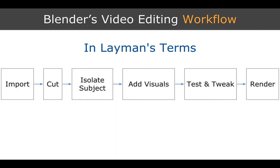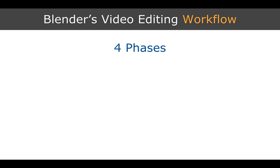So we import, we cut, we isolate the subject, we add our visuals, we test and tweak it, and then we render. Now I typically do these things in four phases. Phase one is where we're going to import the footage, align the audio if we have external audio, and then we're going to make our cuts. Cut one is going to be our rough cut where we cut out all of the mistakes — everything big that we know right away we don't want.